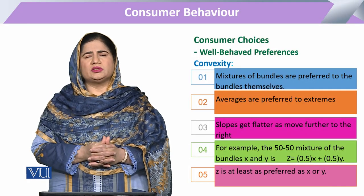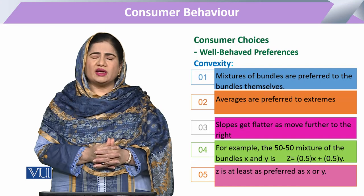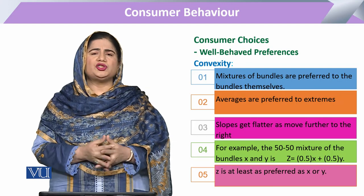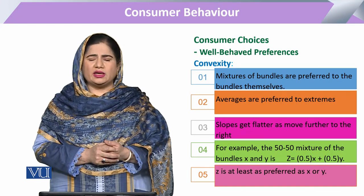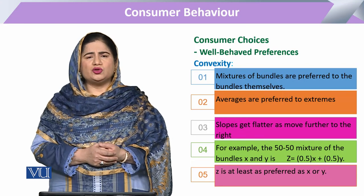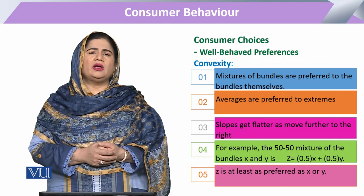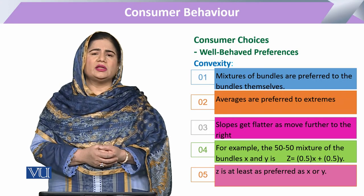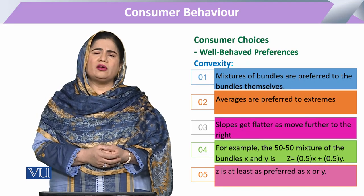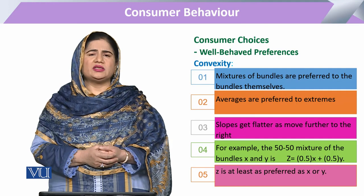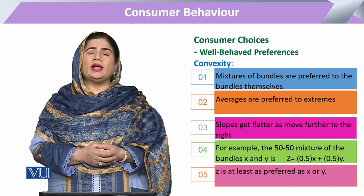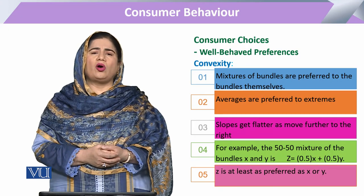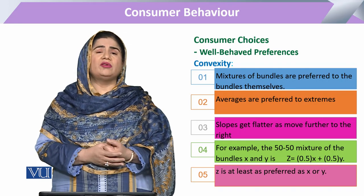The third concept related to this is convexity. In convexity, we say that it is related to the shape of the indifference curve. In consumer behavior, consumers will have a well-behaved preference curve if those preferences are exhibited in the form of convexity. When we say convexity, it means the curve will be negatively sloped towards the origin — negatively sloped or inward sloping.